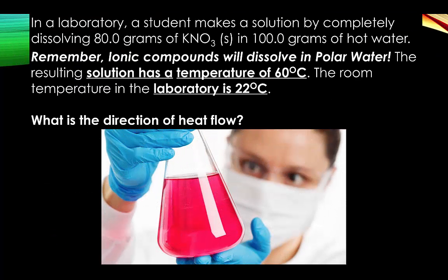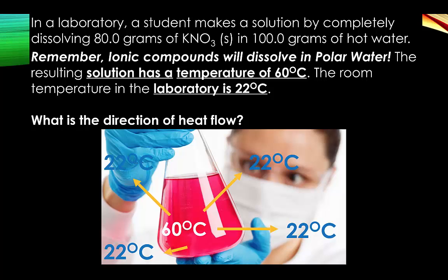Here's a Regents question that might pop up. In a laboratory, a student makes a solution by completely dissolving 80 grams of KNO3 in 100 grams of hot water — ionic compounds will dissolve in polar water. The resulting solution has a temperature of 60 degrees Celsius, and room temperature is 22 degrees Celsius. Heat will always flow from the hotter body to the cooler body, so heat flows from 60°C toward 22°C. This is exothermic, because the solution is warmer and releasing heat to the cooler surroundings.